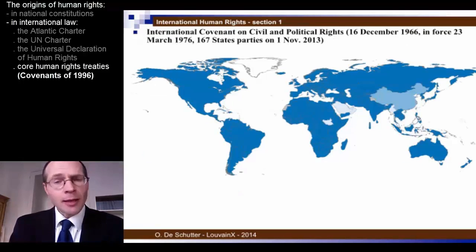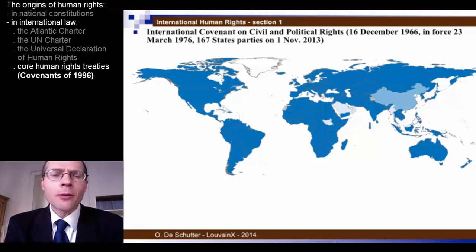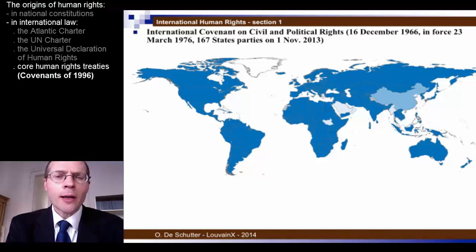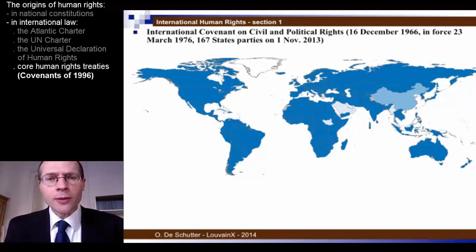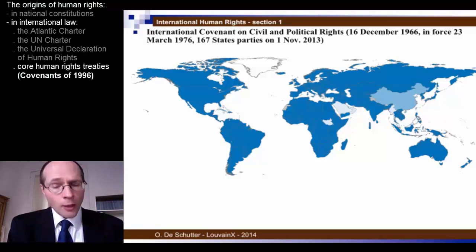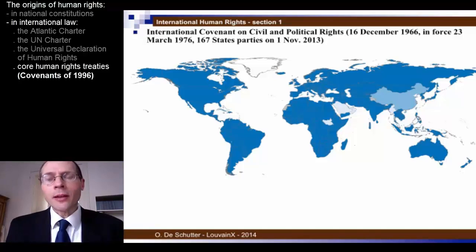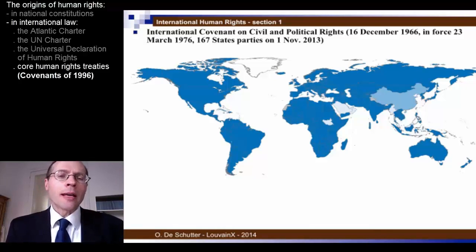The other covenant adopted at the same time was the Covenant on Civil and Political Rights. The ICCPR entered into force on 23rd of March 1976 and has 167 states parties — slightly more than the ICESCR as of November 2013. China, for example, has ratified the ICESCR but not the ICCPR, and the United States has done the exact opposite, having ratified the ICCPR but not the ICESCR on economic and social rights.